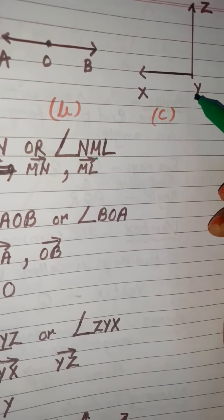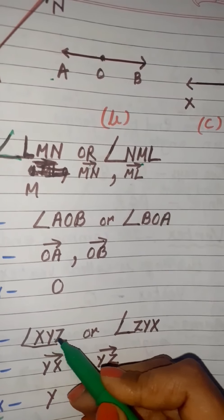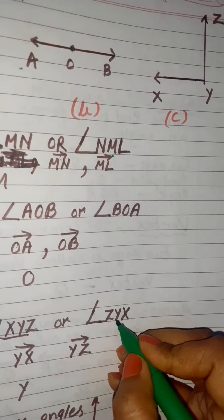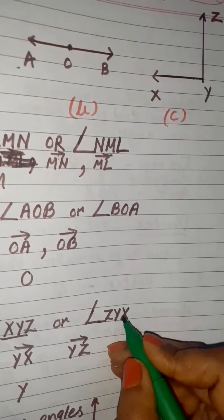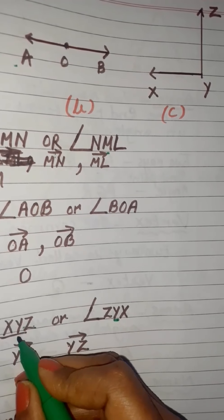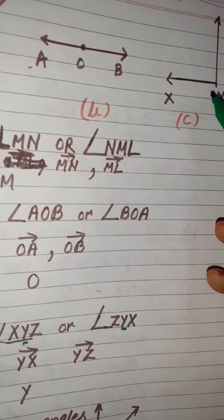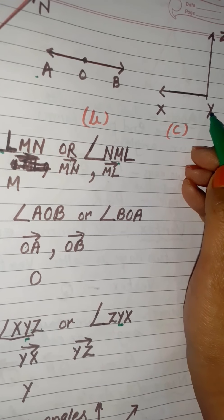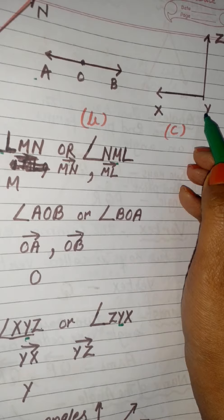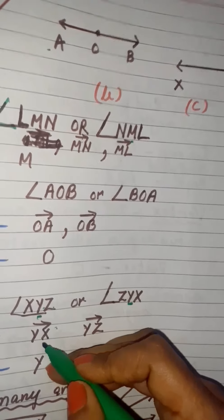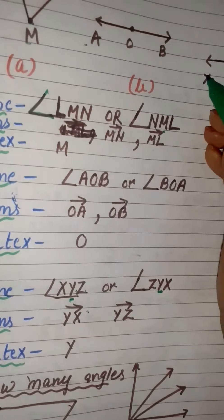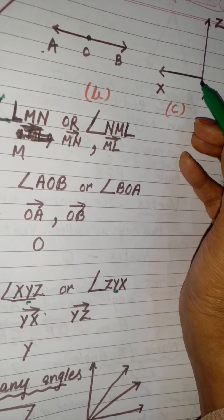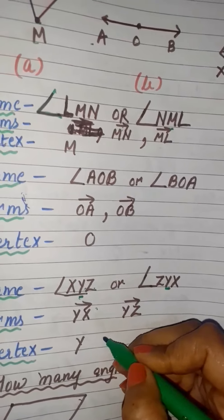In the third example, the name of the angle is XYZ or ZYX, because Y is the vertex and must always come in the middle. The arms, starting from the vertex, are YX and YZ. The common end point is Y, since the two rays YX and YZ share end point Y.